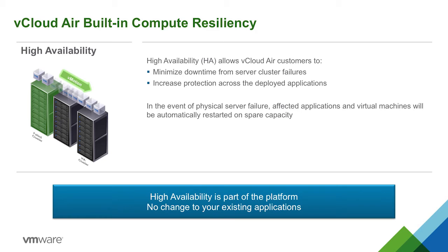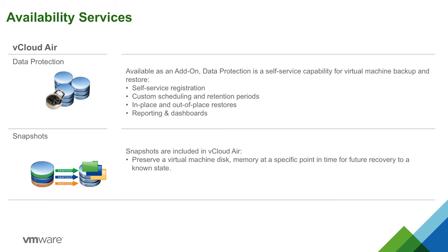In the event of a physical server failover, the affected OS and its applications will be automatically restarted on the spare capacity. In addition to HA, vCloud Air provides an add-on data protection service that can provide daily backups of your VMs or entire virtual data center. There is also an included snapshot feature, which can capture the running state of any VM for future recovery.